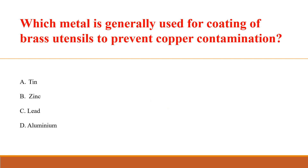Which metal is generally used for coating brass utensils to prevent copper contamination? Answer A: Tin.